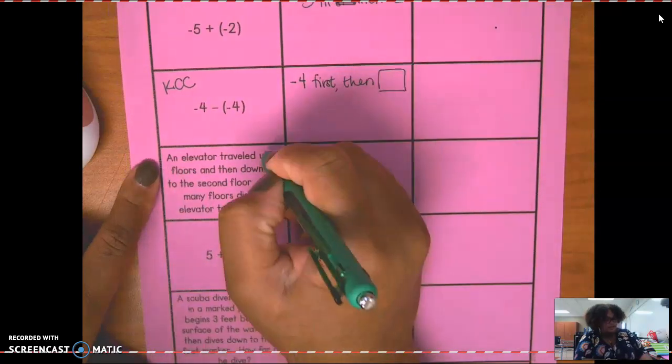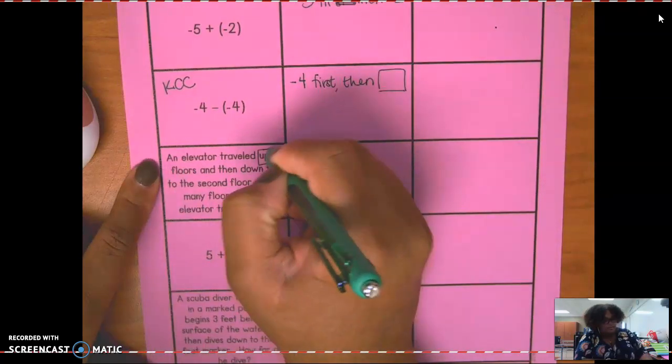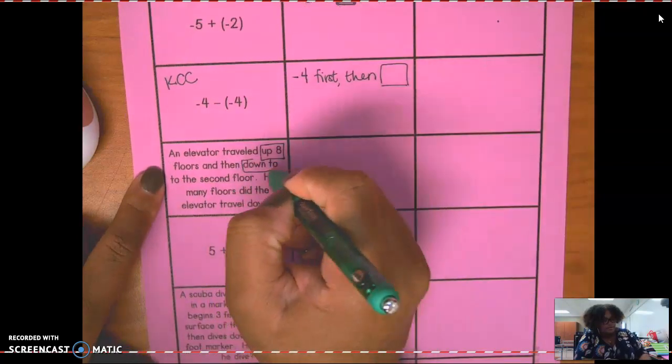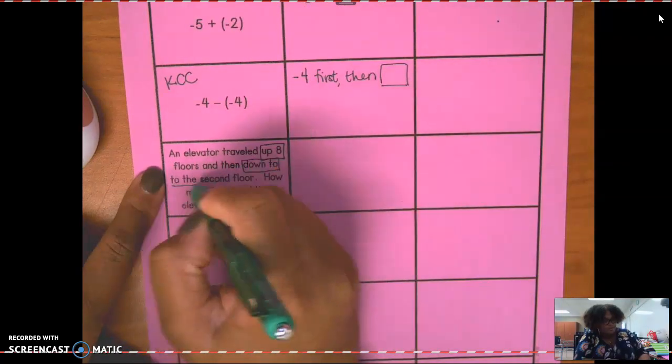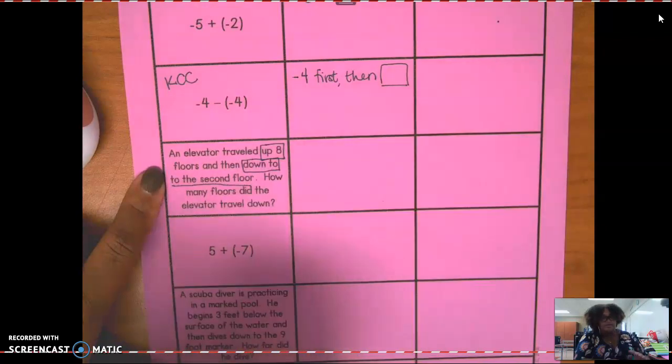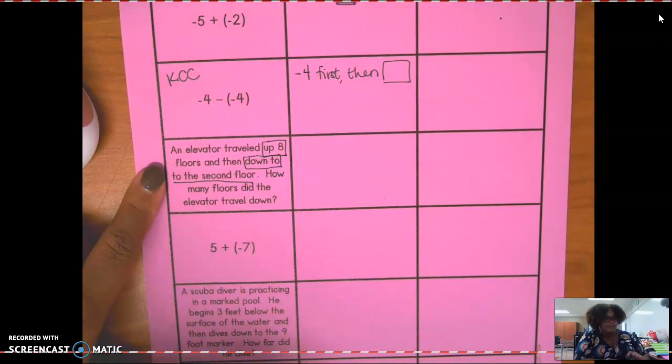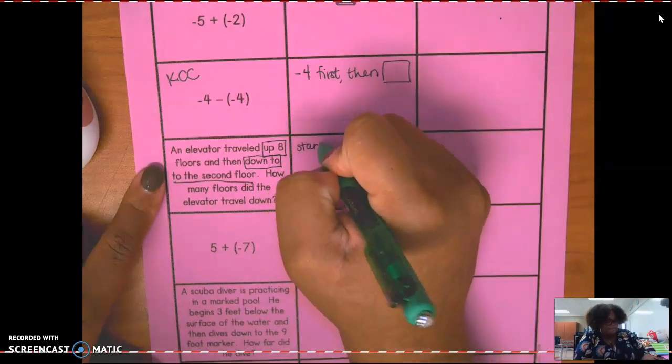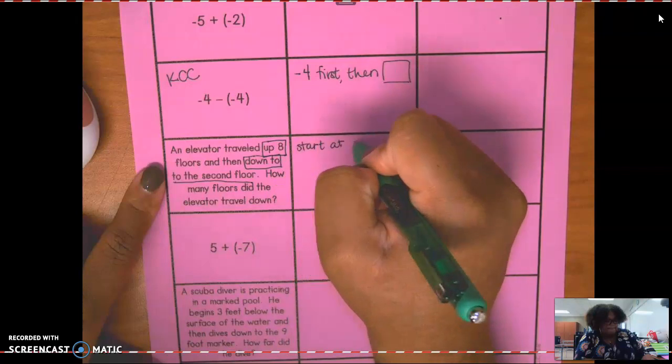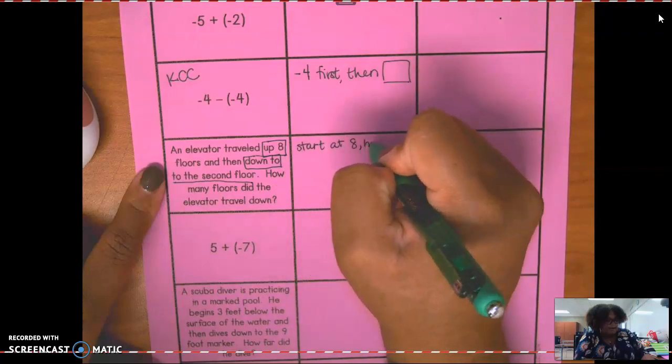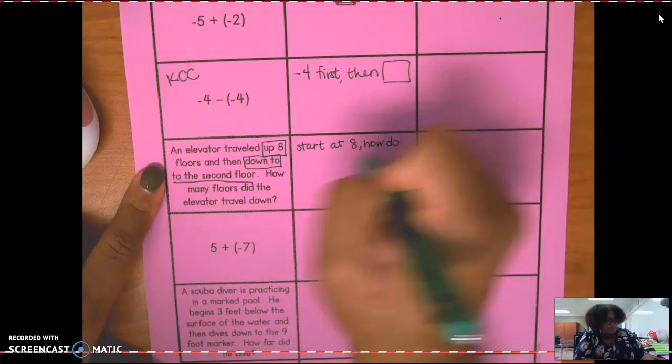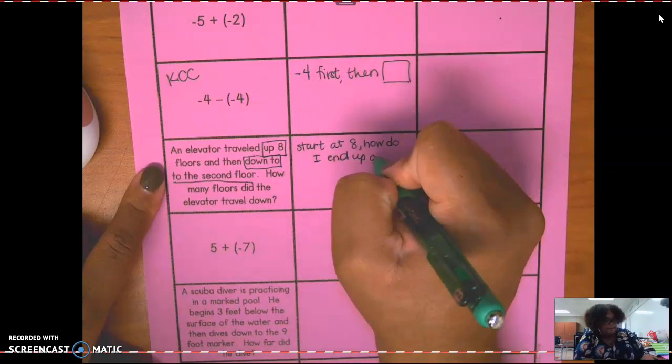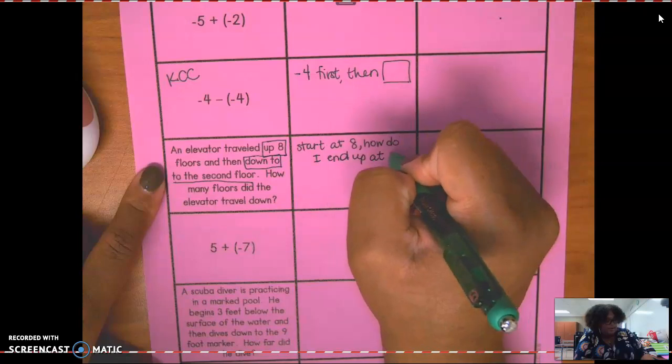Down here, an elevator traveled up eight floors. Up means positive. And then down to the second floor. Down to the second, not down to, but down to the second. So how many floors did the elevator travel down? So if I start at eight, how do I end up at two?